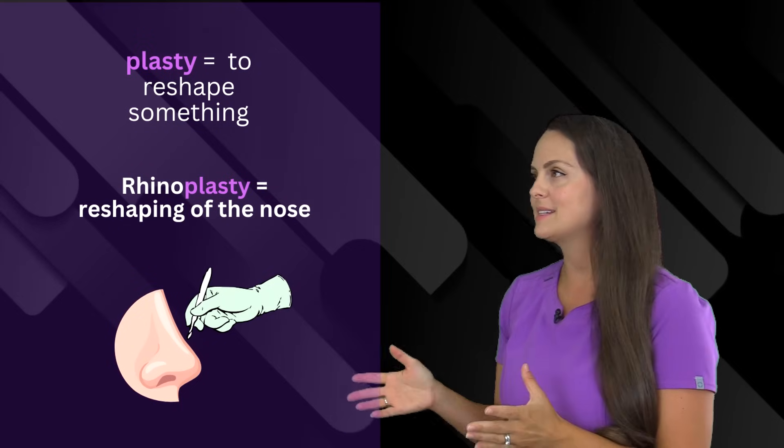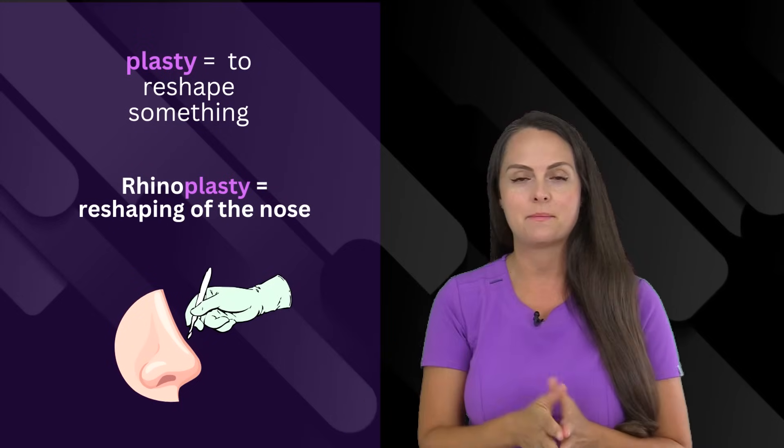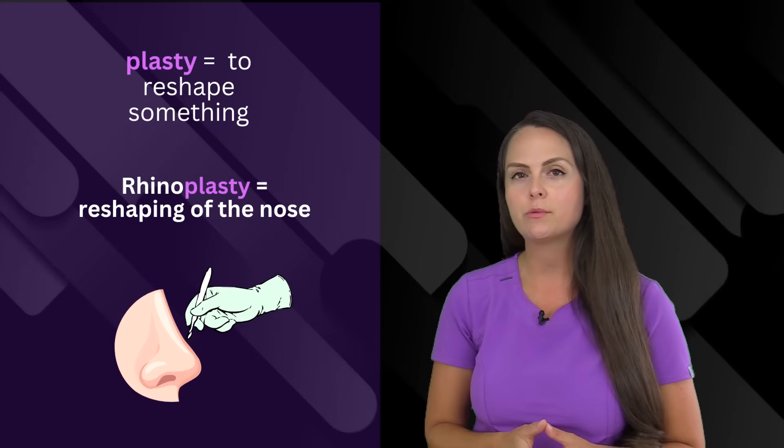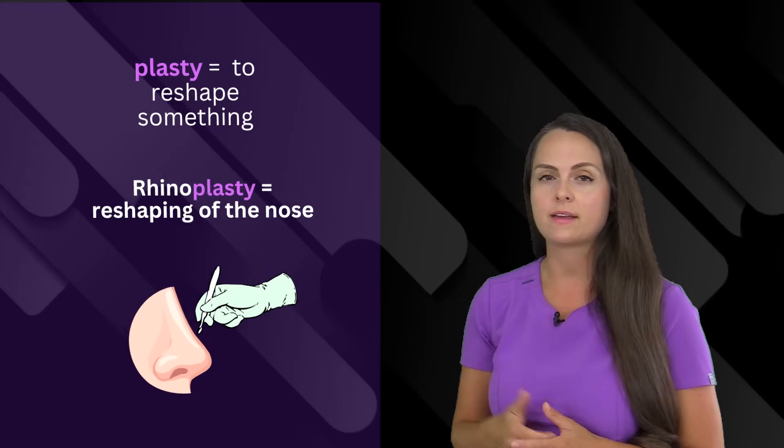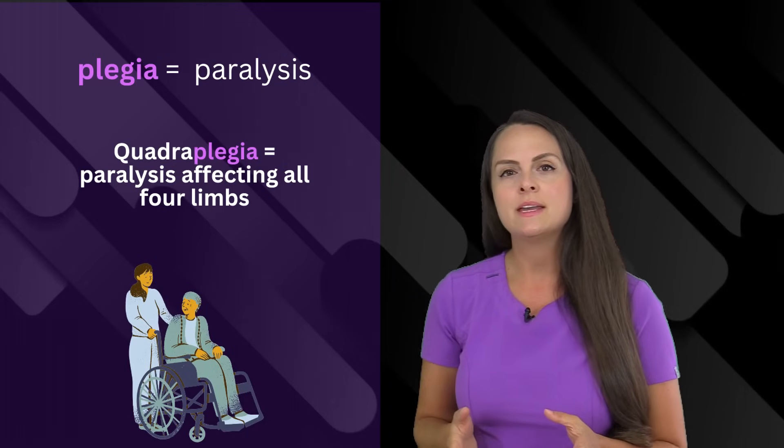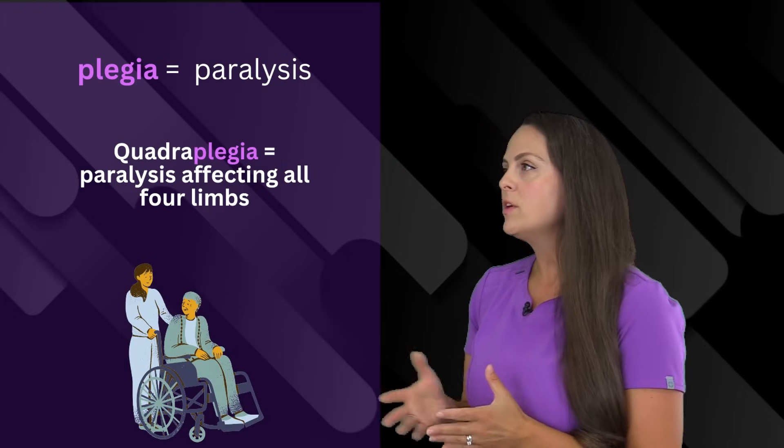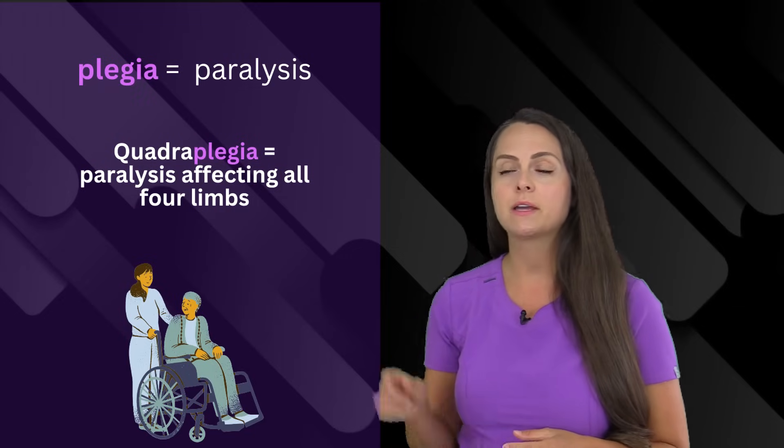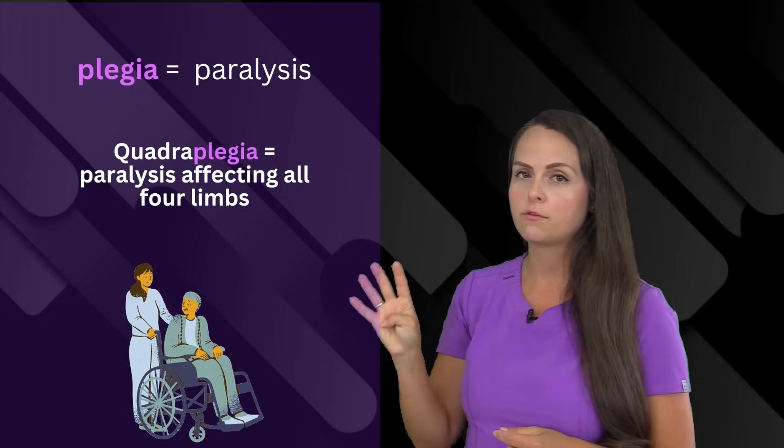Up next is the suffix plasty. This means to reshape something. If someone goes in for a surgical procedure to reshape the nose, we would say that that is a rhinoplasty. Plegia means paralysis. With the term quadriplegia, we're talking about paralysis that affects all four limbs. Because remember that prefix quad means four.